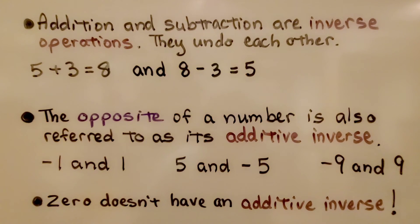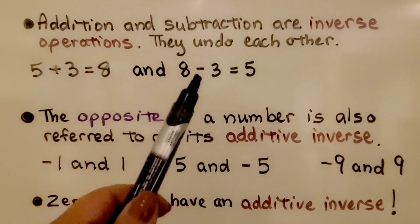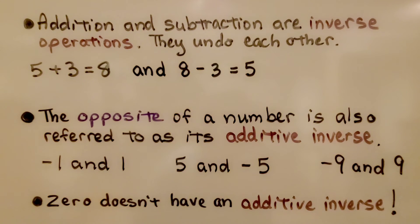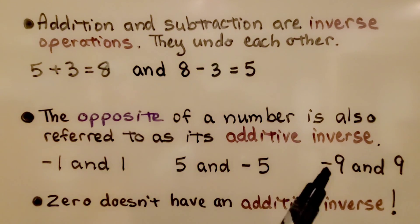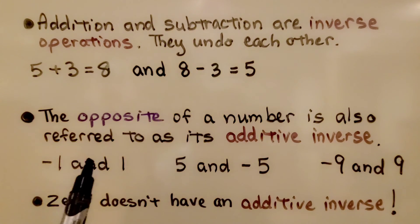Addition and subtraction are inverse operations — they undo each other. 5 plus 3 is equal to 8, and 8 minus 3 is equal to 5. The opposite of a number is also referred to as its additive inverse: negative 1 and 1, 5 and negative 5, negative 9 and 9 are additive inverses. And 0 doesn't have an additive inverse — it doesn't have an opposite.